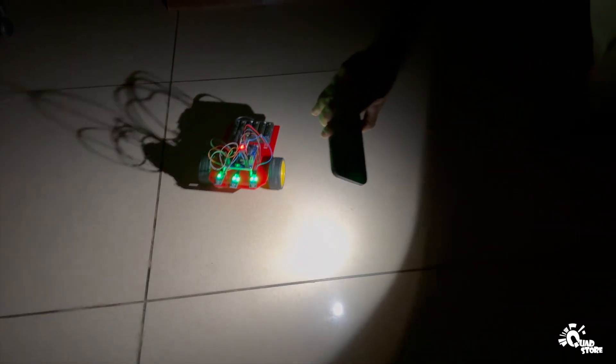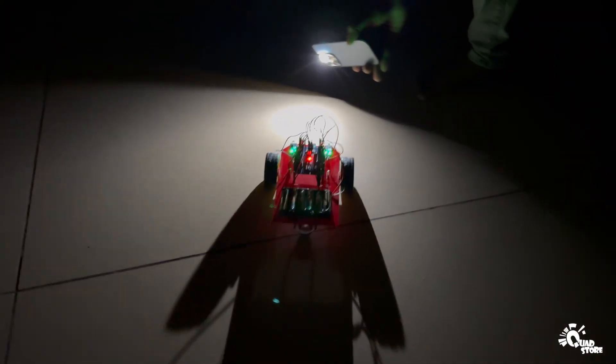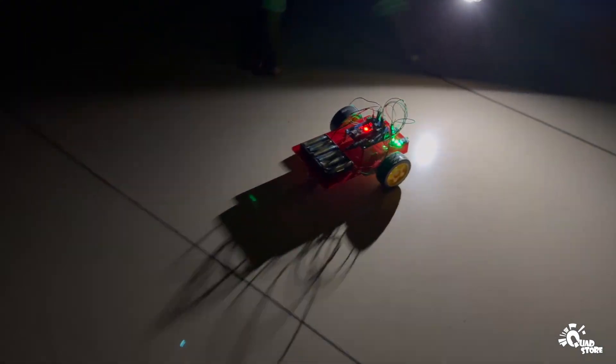Let's build a do-it-yourself light-following robot car using the quad store kit. This robot detects and follows a light source in dark environments.